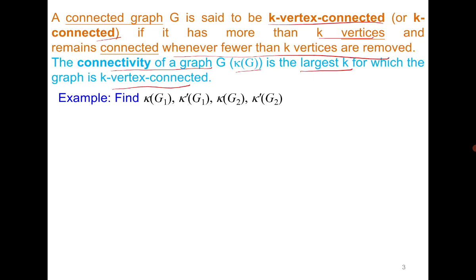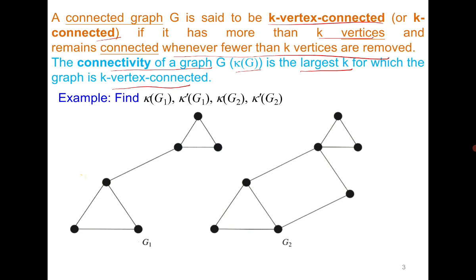For G1, you can see that it has a cut vertex as well as a cut edge, and therefore κ(G1) and κ'(G1) are both equal to 1. For the next graph G2, it has a cut vertex, so κ(G2) = 1, but it does not have a cut edge. You have to delete at least two edges to disconnect the graph, and therefore κ'(G2) = 2.